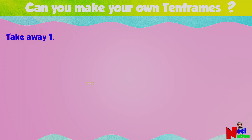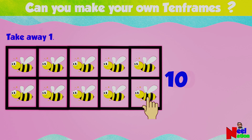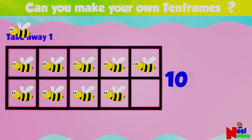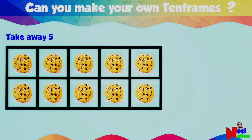Now it gets more tricky. Here you have 10 bees in the 10 frame. One flew away! How many bees are left in the 10 frame? Nine — you are right! When you take one away from 10, you get 9. Ten minus one equals nine.